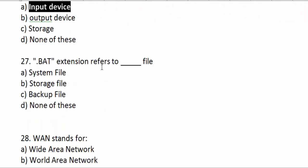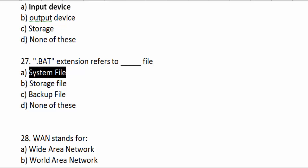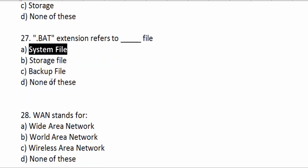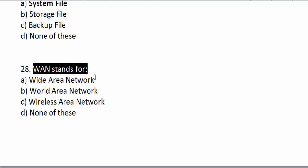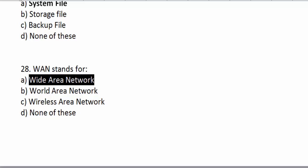A .bat extension refers to a system file. WAN stands for Wide Area Network.